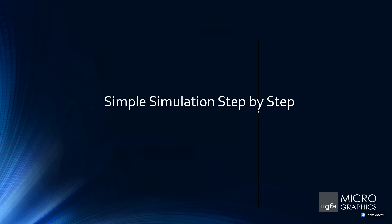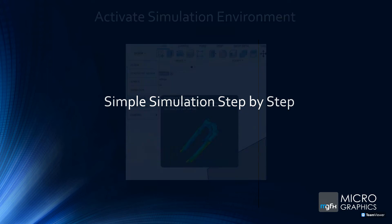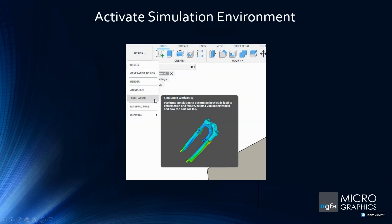Now I'll do a simple step-by-step on how to set up a simulation for linear analysis. When you're in Fusion 360, you can see the design button at the top. Click the drop-down, go down to simulation, and it starts up the process for you.